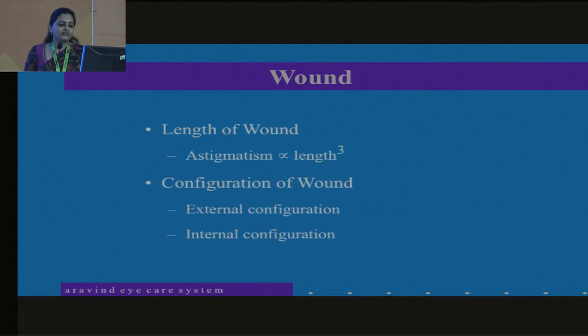So what we have to remember is astigmatism is directly related to the cube of length and it is inversely related to the distance from the limbus. And also the configuration of the wound helps in getting better results.